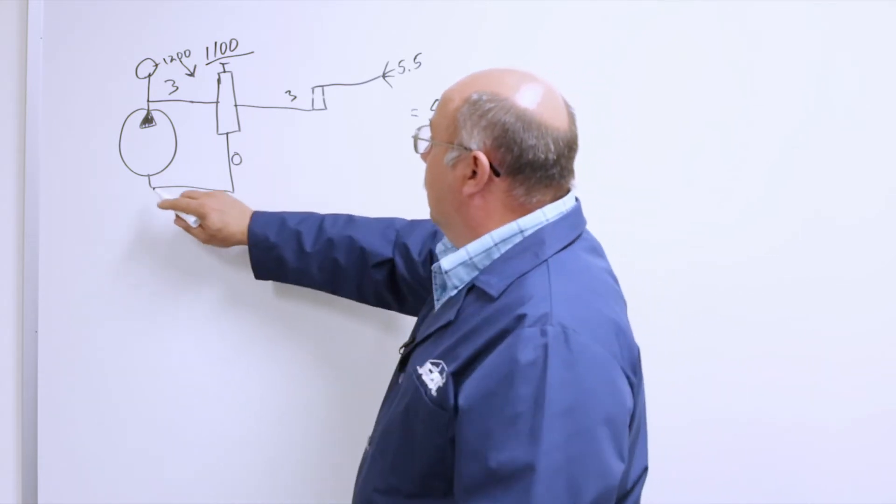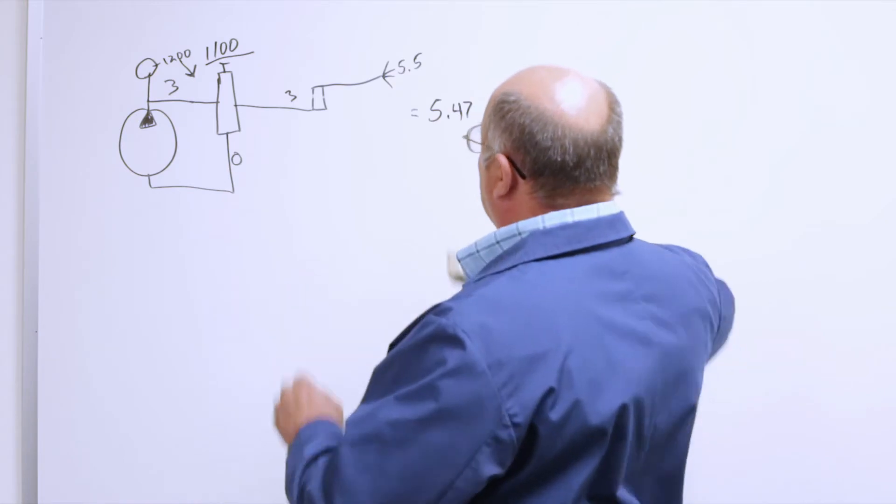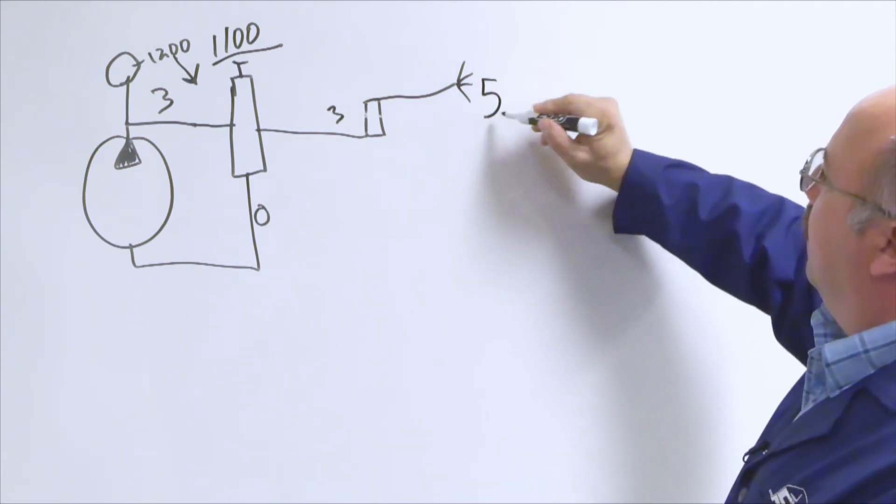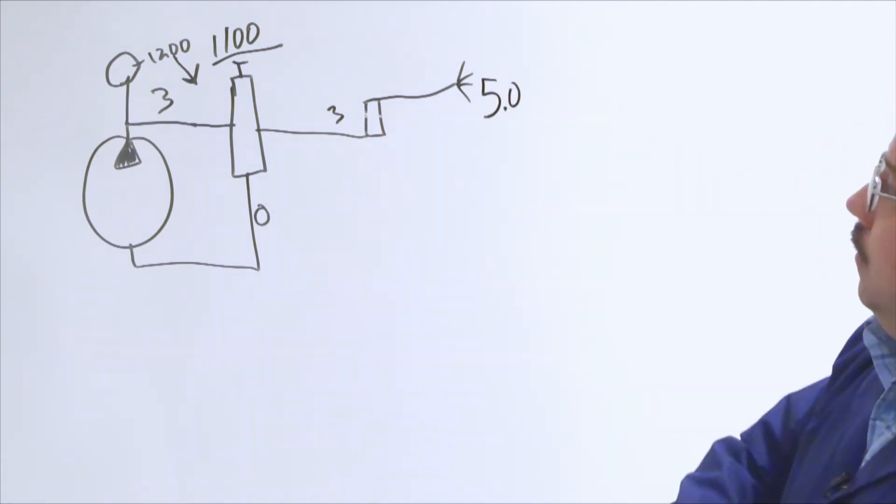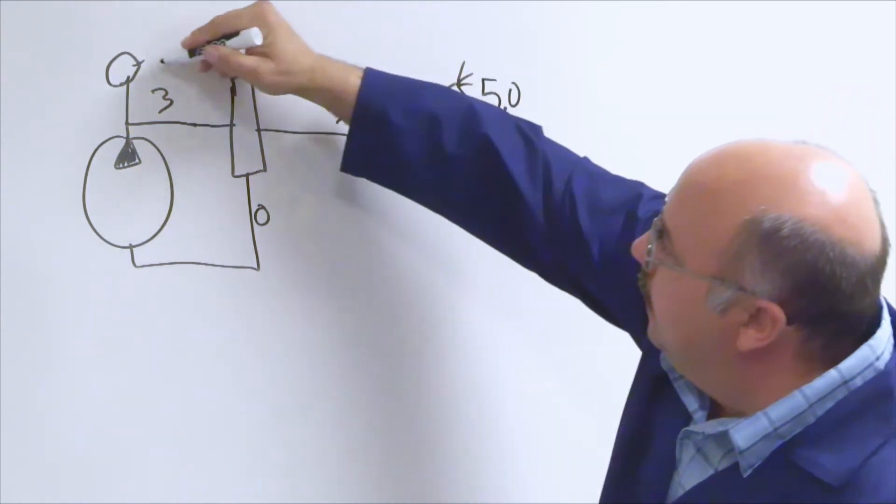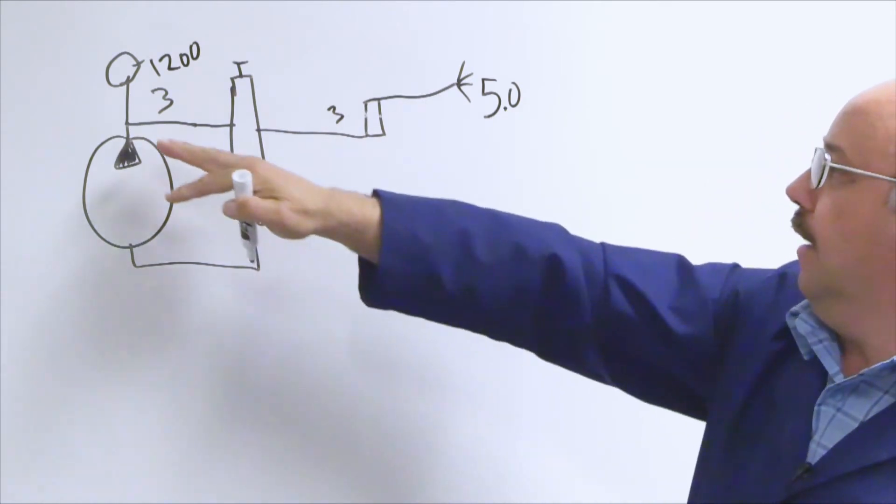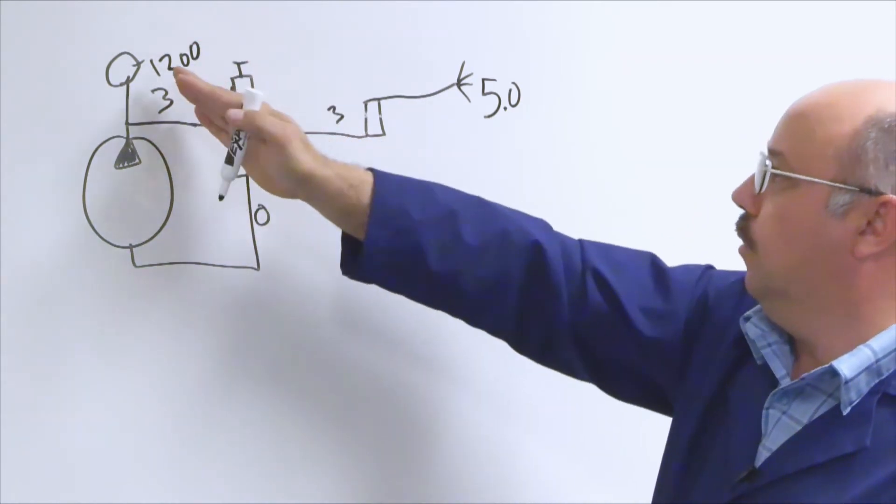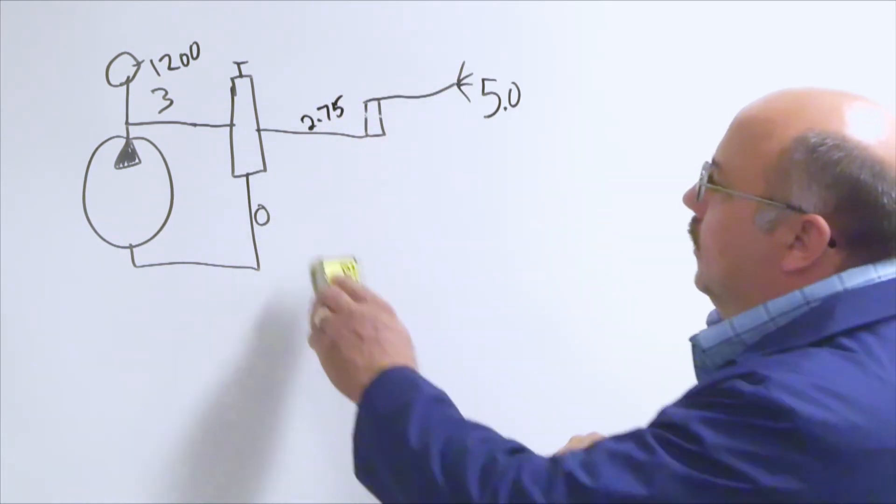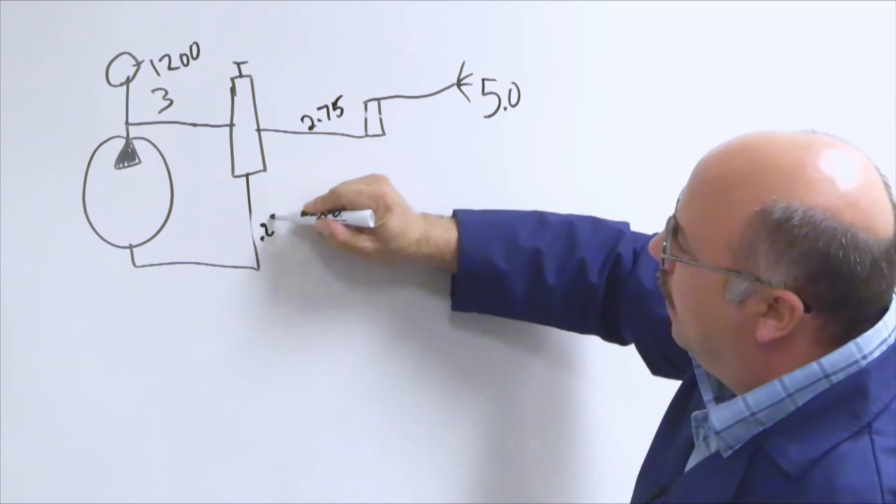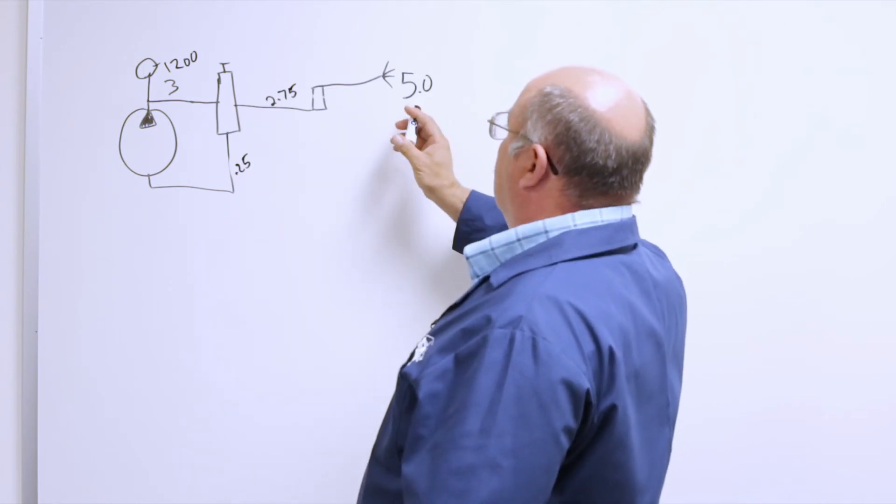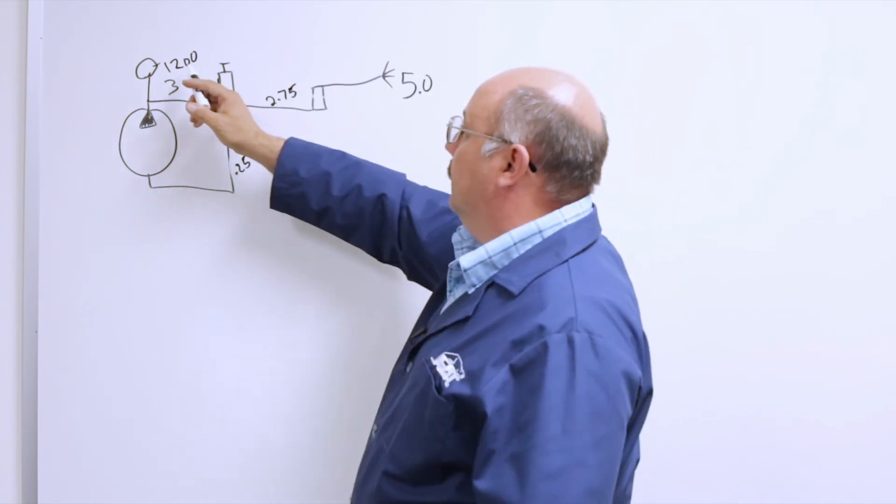So to remedy this we could have chosen a different nozzle to put in our system. What if we were to put a number five in here? Now when the pump is running three gallons at 1,200, we still have three gallons, we still set the unloader at 1,200 psi. We now have 2.75 gallons per minute on the nozzle and 0.25 gallons in bypass.